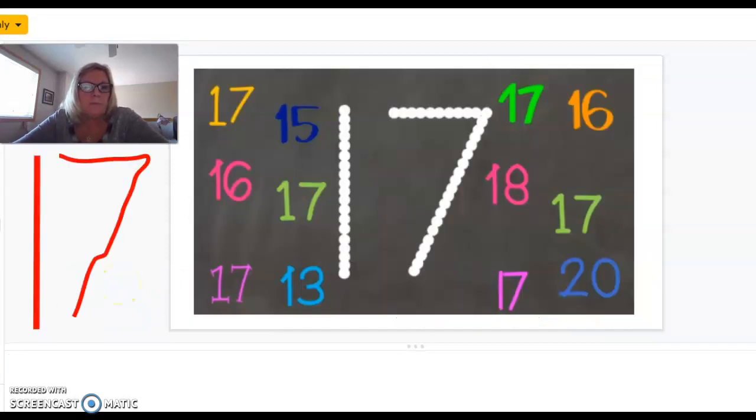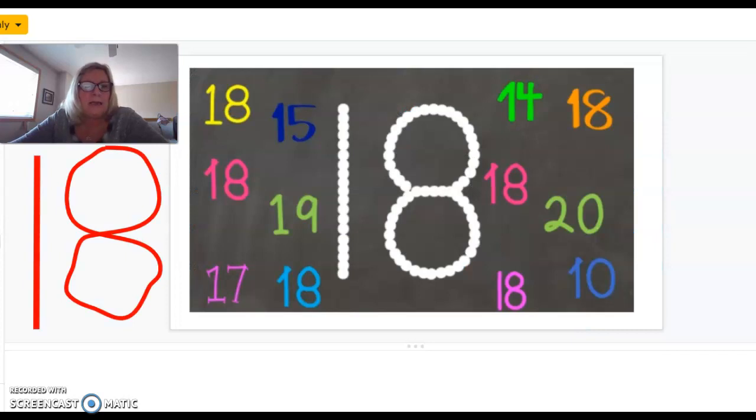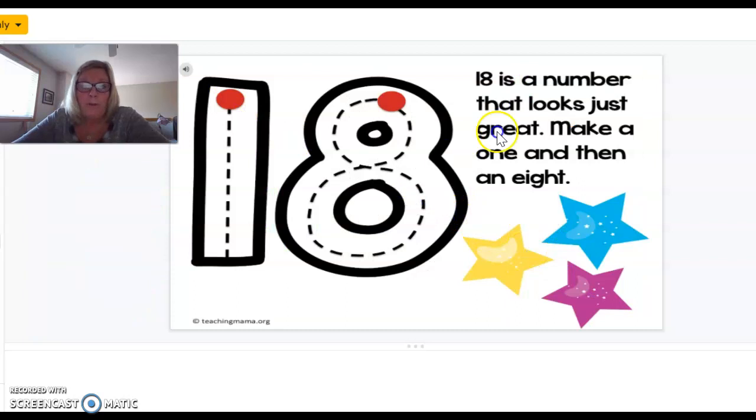Good. Now, let's look at the number 18. The poem for number 18 is: 18 is a number that looks just great. Make a 1 and then an 8. All right. Again, will you sky write with me as I show you on my screen? Straight line down and then make your 8. Make the letter S and then curve back around and connect there. Good.